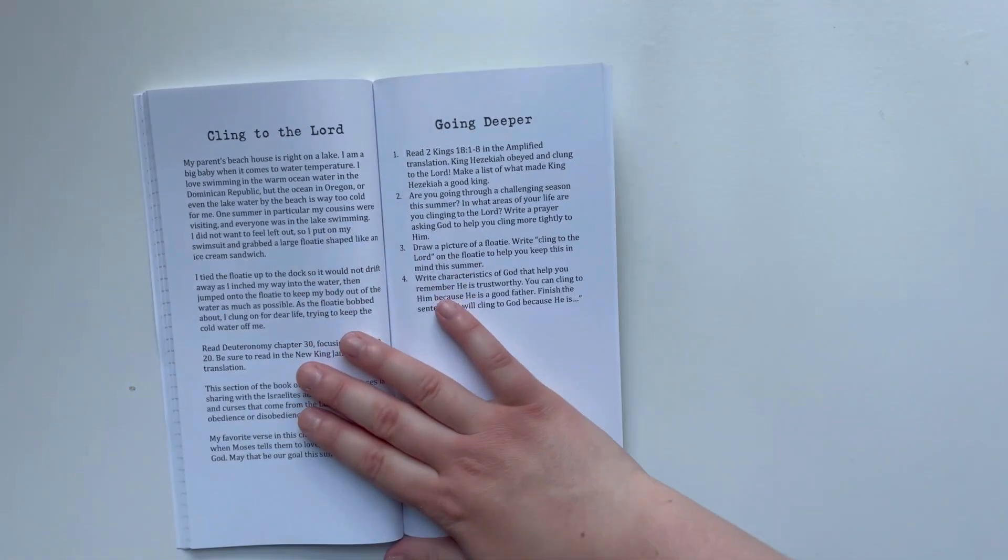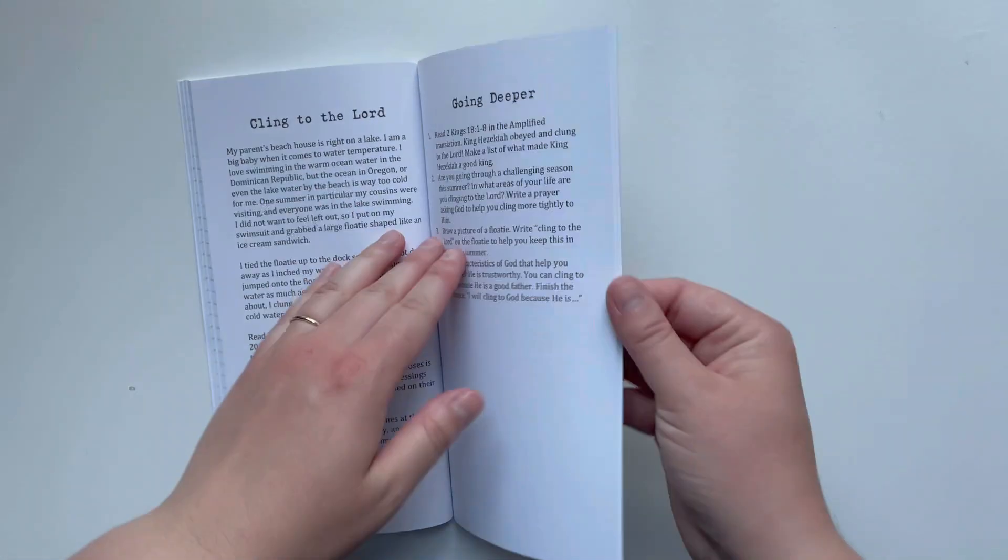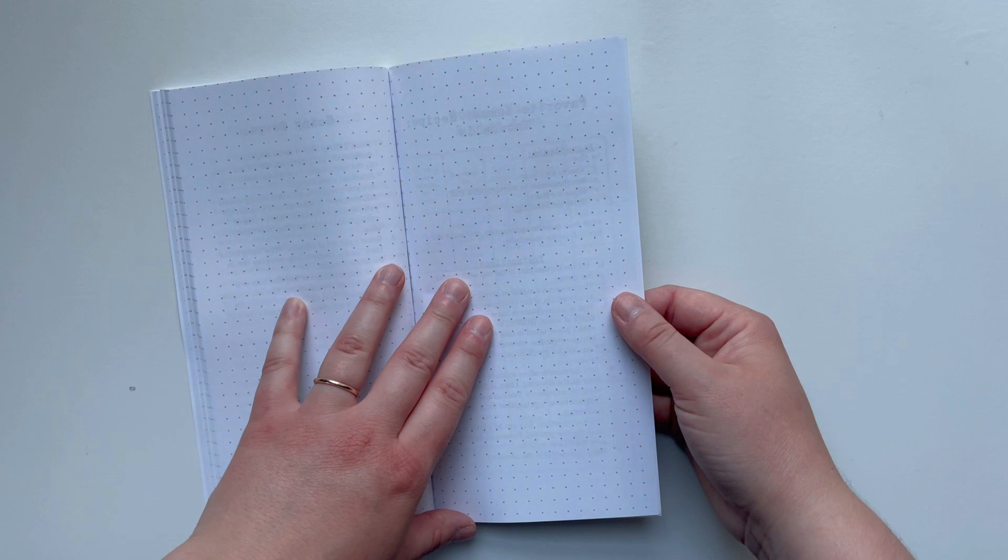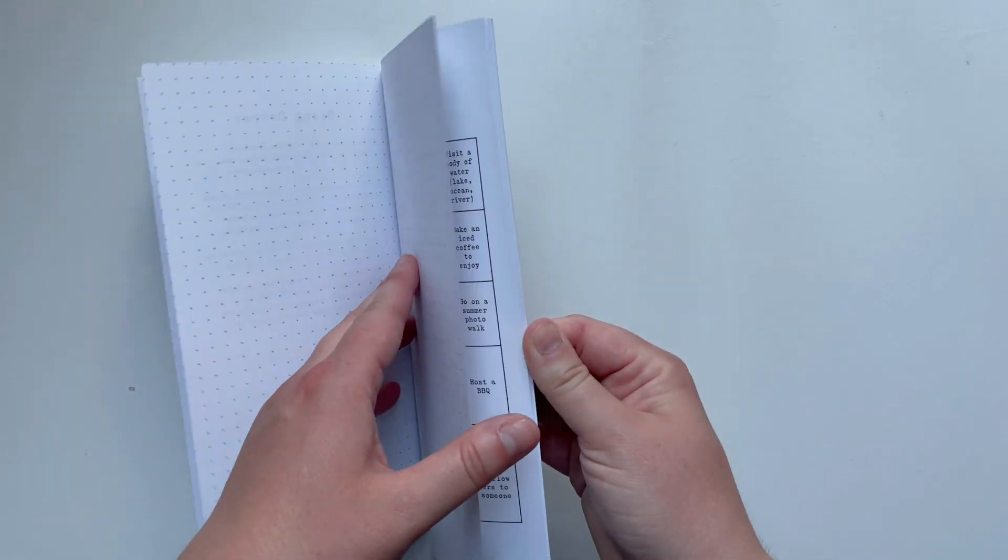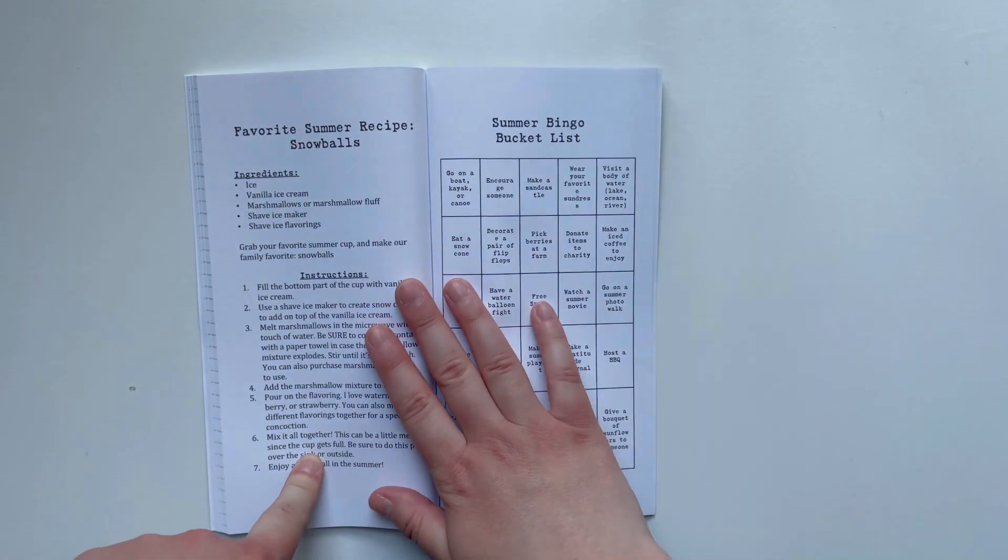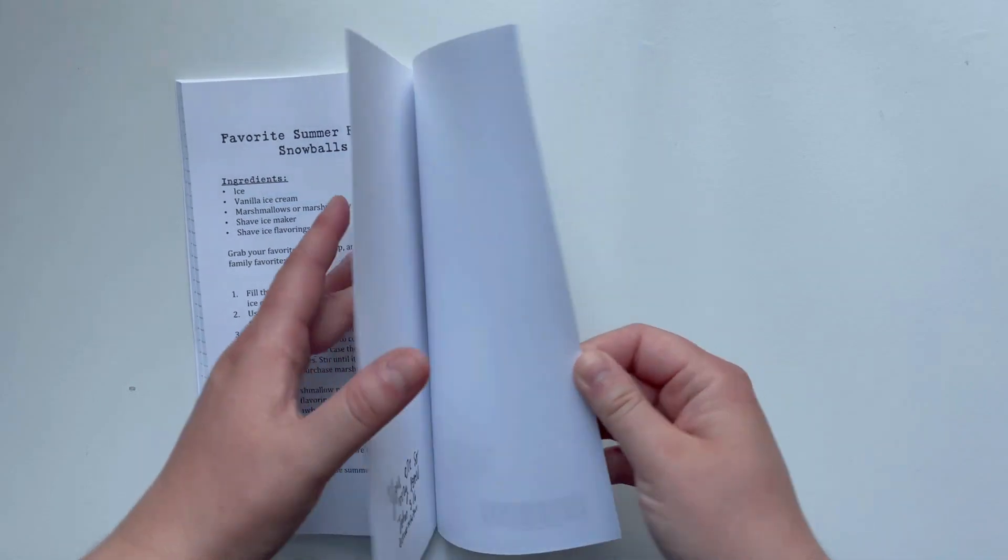And then last but not least, we have Cling to the Lord. This devotion is all about me at the lake, clinging to the floaty for dear life. That is a really good one—how we need to cling to the Lord. Then we have my favorite summer recipe, snowballs, and then a fun little summer bingo bucket list.